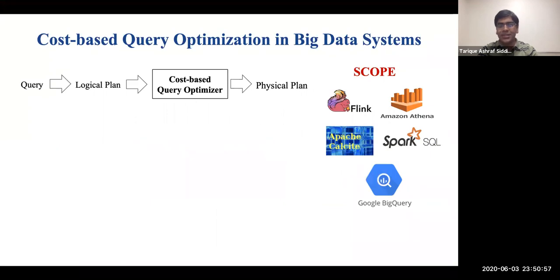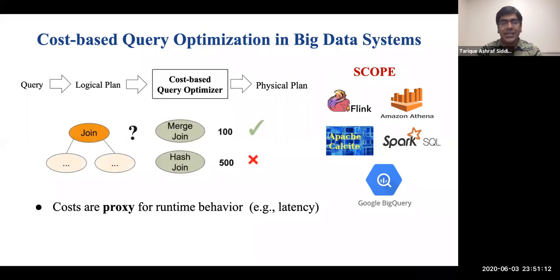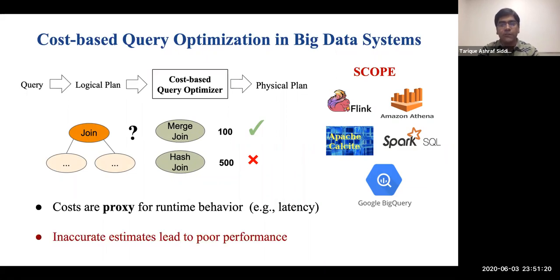Most big data systems in the cloud, such as Scope and BigQuery, expose SQL-like declarative interfaces for a better user experience. These systems take a user query and automatically figure out the most efficient physical plan for execution using a cost-based optimizer. Internally, these systems leverage cost models for predicting the runtime behavior of operators and select the ones with the least cost.